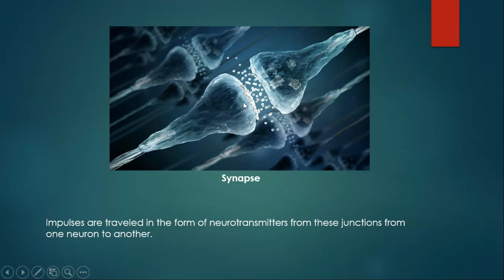Let me tell you how the stimulus works. These are the gaps between the two neurons, and these gaps are called synapses. The impulses are traveled in the form of neurotransmitters from these junctions from one neuron to another. These are the neurotransmitters and they are responsible for transferring the impulses from one part to another.